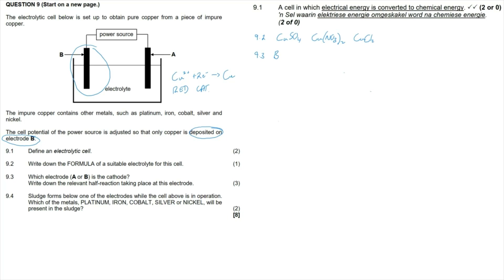The relevant half-reaction taking place at the cathode: we write the half-reaction in which copper is reduced. Starting with copper two-plus ions (Cu²⁺), it gains two electrons, written as only a forward reaction, forming copper metal: Cu²⁺ + 2e⁻ → Cu.